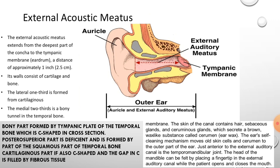The skin of the canal contains hair, sebaceous glands, and ceruminous glands, which secrete a brown wax-like substance called cerumen or ear wax — it's the ear's self-cleaning mechanism, which moves old skin cells and cerumen to the outer parts of the ear. Just anterior to the external auditory canal is the temporomandibular joint (TMJ); the head of the mandible can be felt by placing a fingertip in the external auditory canal while the patient opens and closes the mouth.